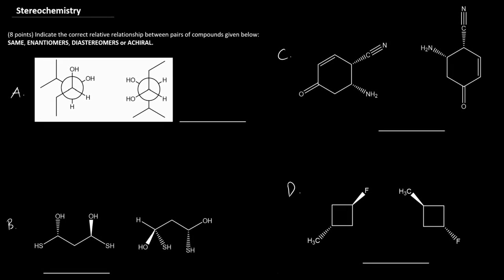This is an exam review question related to stereochemistry. We need to indicate the correct relative relationship between pairs of compounds given below. They could be the same, enantiomeric, diastereomeric, or achiral.